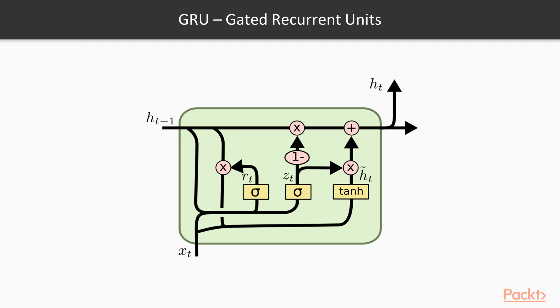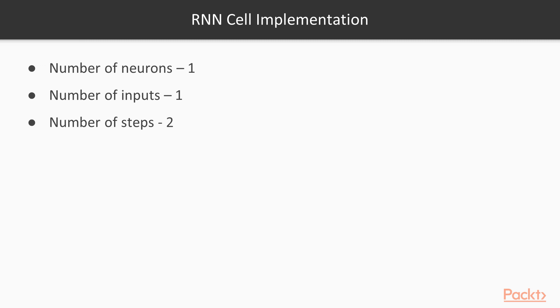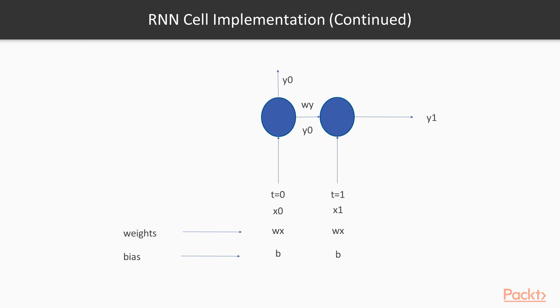With that let's get straight into the code. As a first step I'm going to demonstrate the implementation of a basic RNN cell consisting of one neuron, very similar to what we did in the neural network section when we implemented a basic perceptron. In this case it is a recurrent RNN cell. The number of neurons is one, number of inputs is one, and number of time steps is two. I will show this again in the next video along with the full code demo.